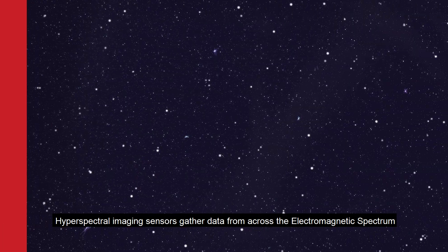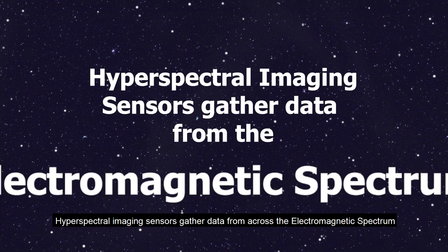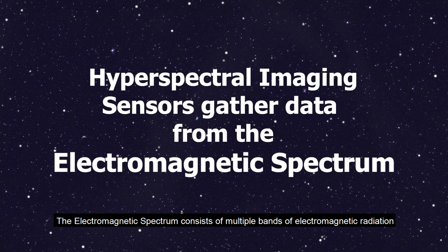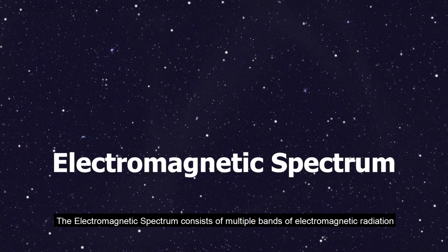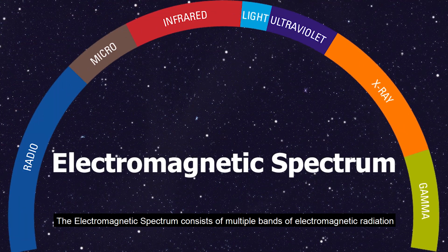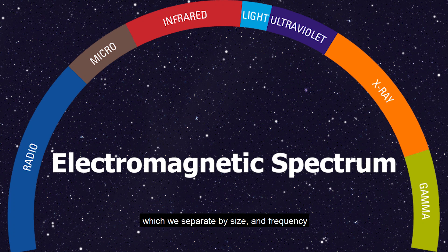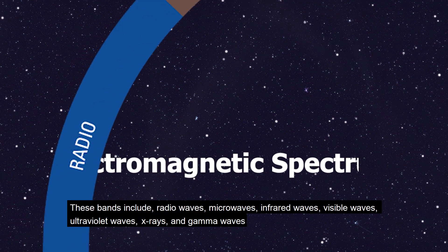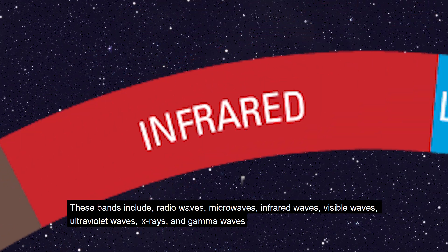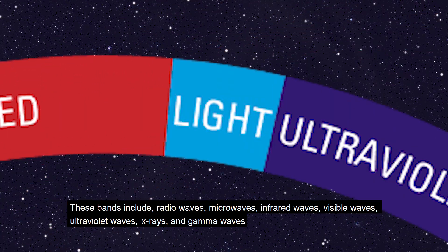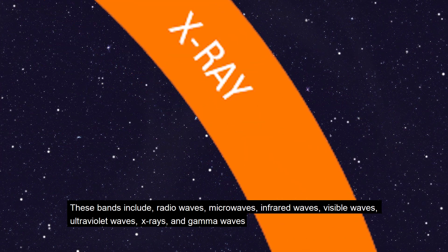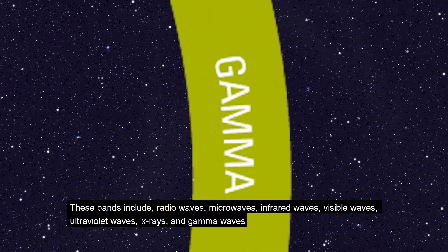Hyperspectral imaging sensors gather data from across the electromagnetic spectrum. The electromagnetic spectrum consists of multiple bands of electromagnetic radiation, which we separate by size and frequency. These bands include radio waves, microwaves, infrared waves, visible waves, ultraviolet waves, X-rays and gamma waves.